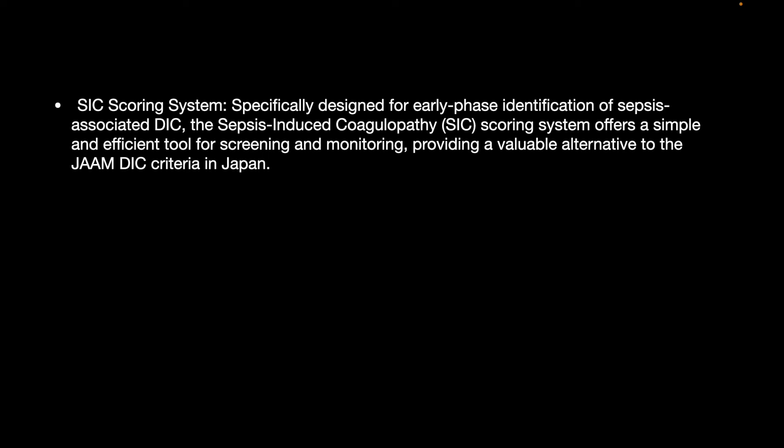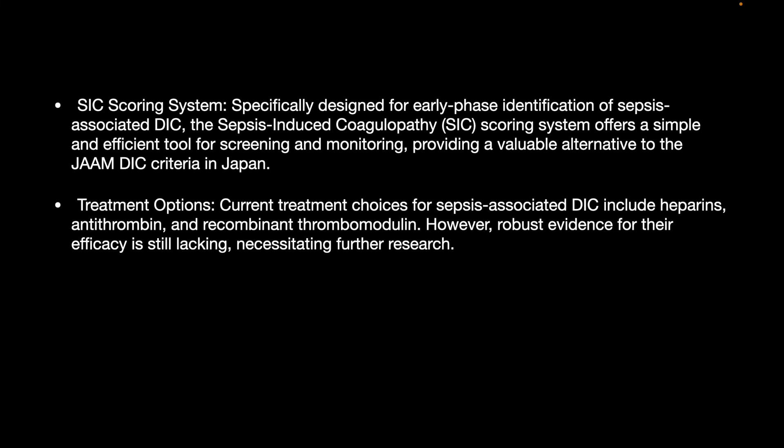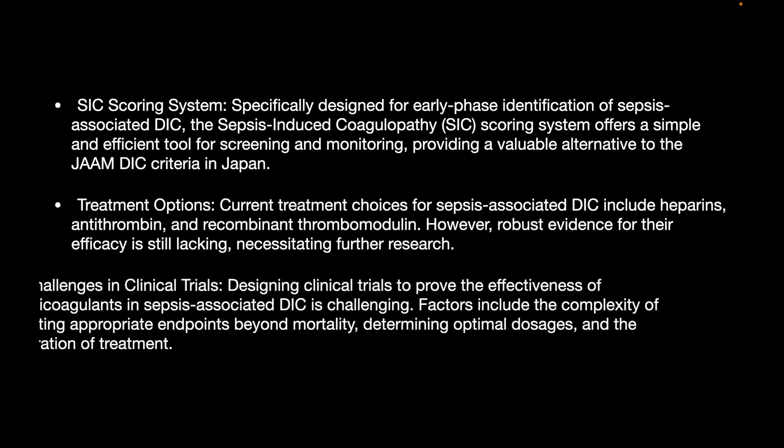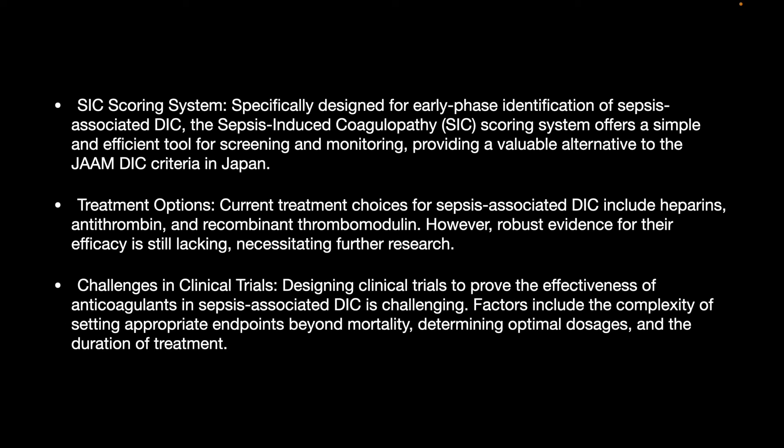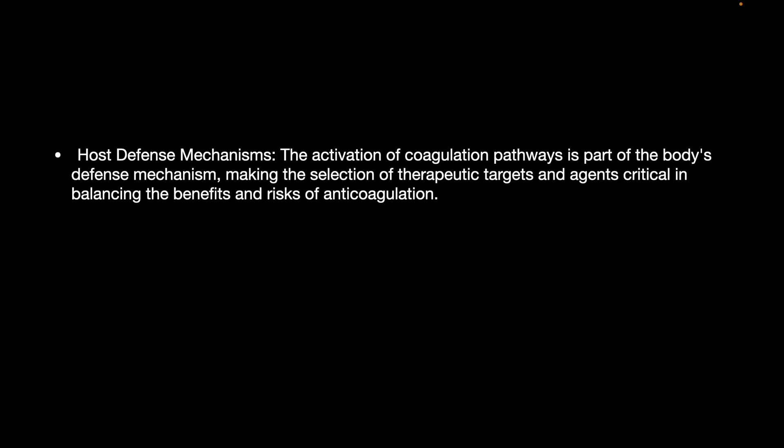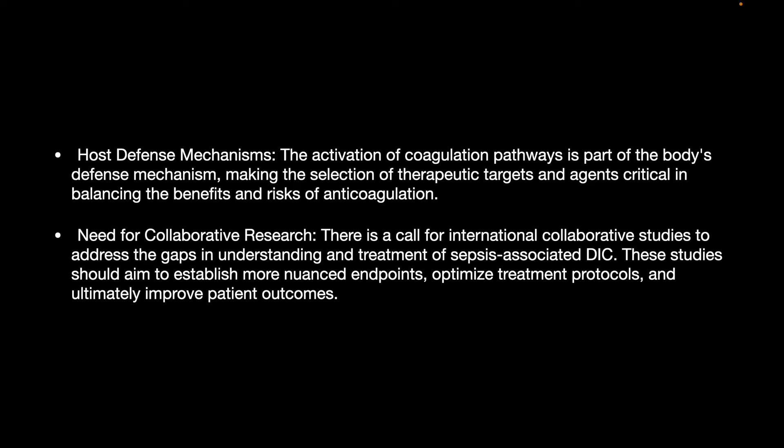The SIC score, specifically designed for early-phase identification of sepsis-associated DIC, offers a simple and efficient tool for screening and monitoring, providing a valuable alternative to JAM-DIC criteria. Current treatment choices for sepsis DIC include heparins, antithrombin, and recombinant thrombomodulin; however, robust evidence for their efficacy is still lacking, necessitating further research. Designing clinical trials to prove the effectiveness of anticoagulants in sepsis-associated DIC is challenging, due to complexity in setting appropriate endpoints, determining optimal dosages and duration of treatment, and balancing the benefit and risk of anticoagulation. There is a call for international collaborative studies to establish more nuanced endpoints, optimized treatment protocols, and ultimately improve patient outcomes.